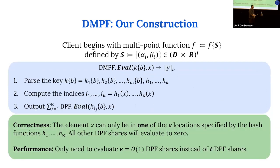When the servers evaluate, instead of evaluating all t point functions, they only need to check the kappa locations specified by the hash functions. They hash their input x with each of the kappa hash functions, get kappa indices, and check only those particular kappa point functions to see if x evaluates to a non-zero value. This is a huge savings when t becomes large.